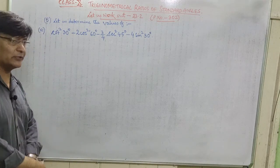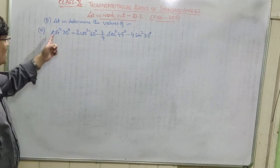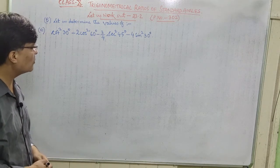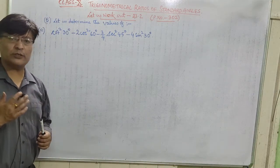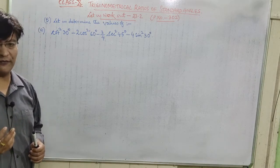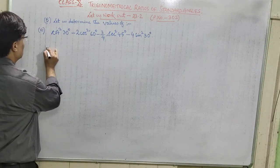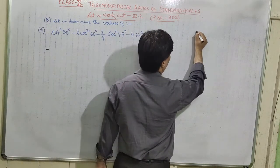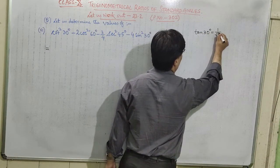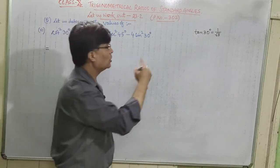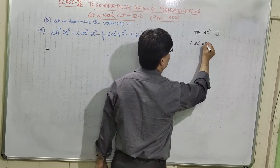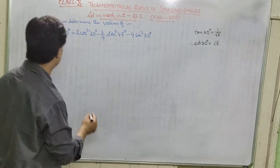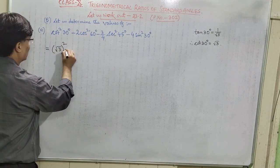Now we will do question number 6: determine the value of cot²30° minus 2cos²60° minus (3/4)sec²45° minus 4sin²30°. You should know trigonometrical ratios of standard angles: 0°, 30°, 45°, 60°, and 90°. The value of cot 30° is the inverse of tan 30°. Tan 30° is 1/√3, so cot 30° is √3. So we write √3 whole squared.